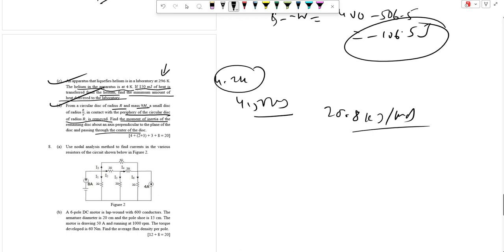Let I₀ be the initial moment here. I₀ is half 9M into R square for a solid disk about its center and after removing the small disk, the remaining disk has a central hole of radius R.